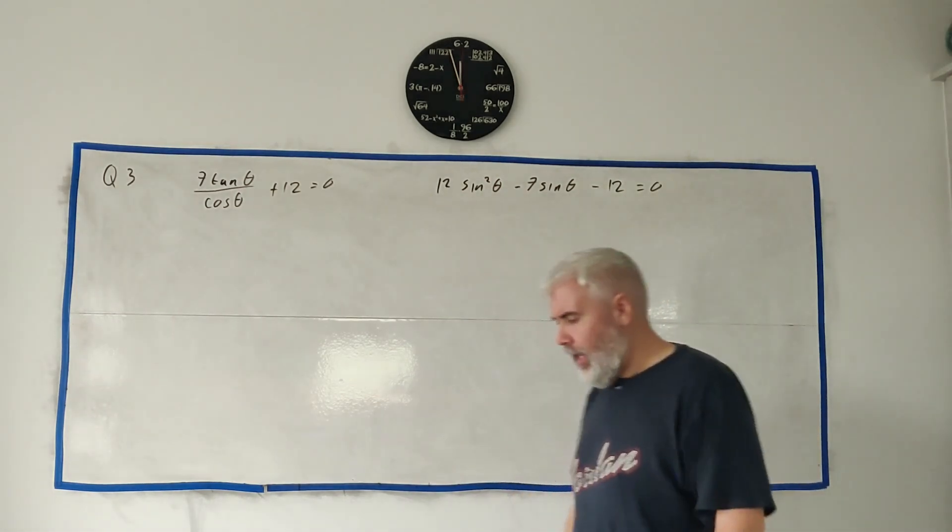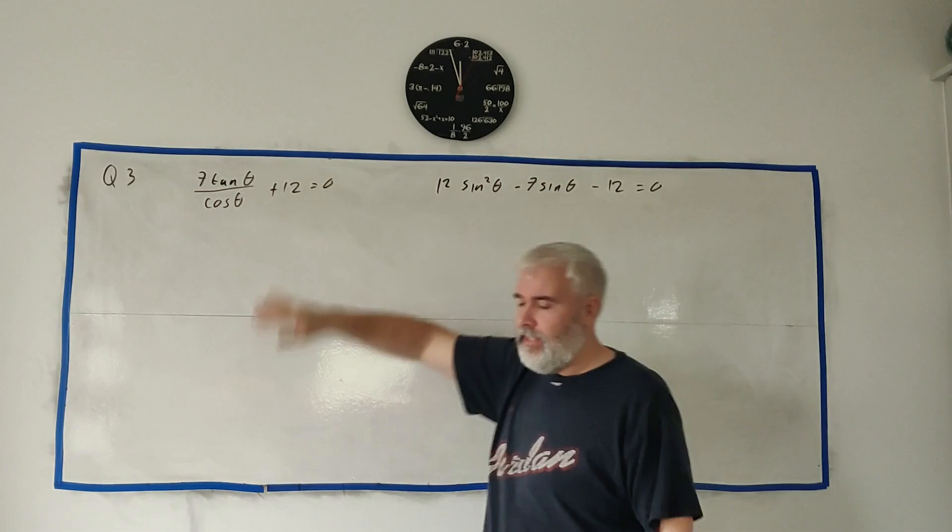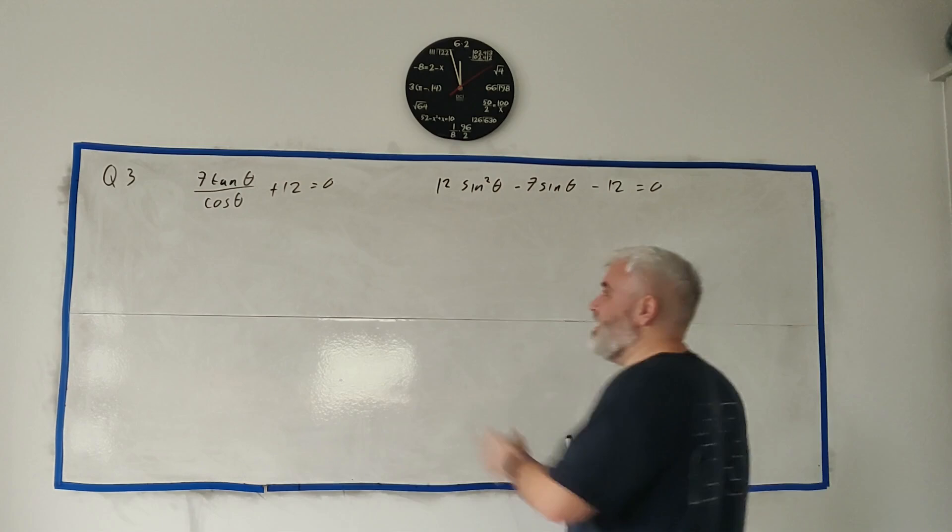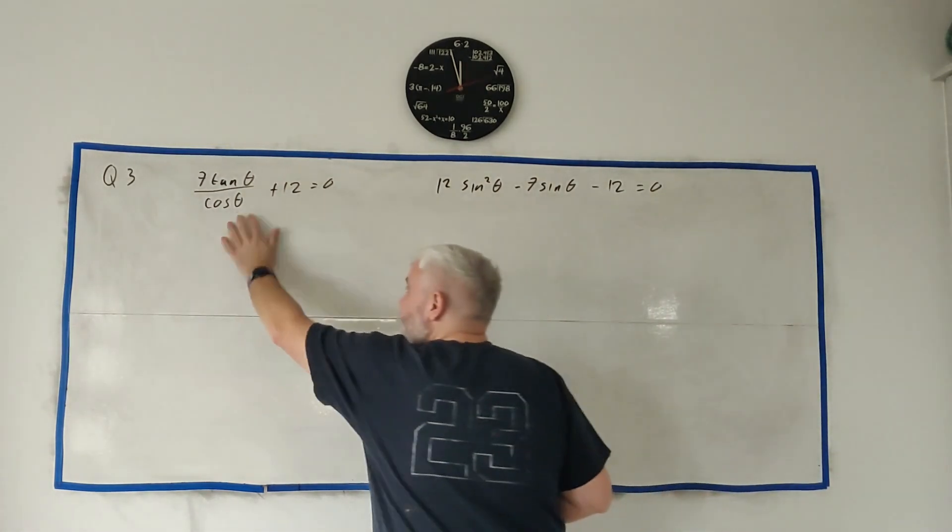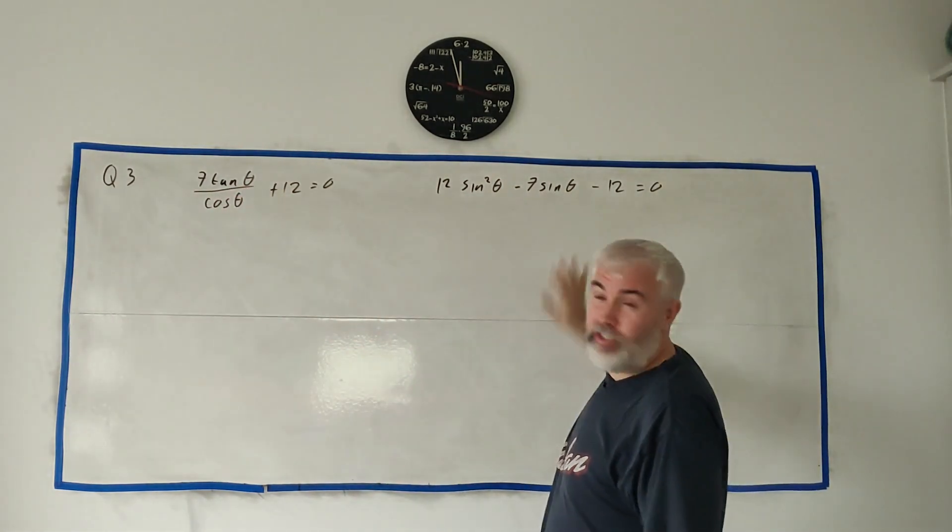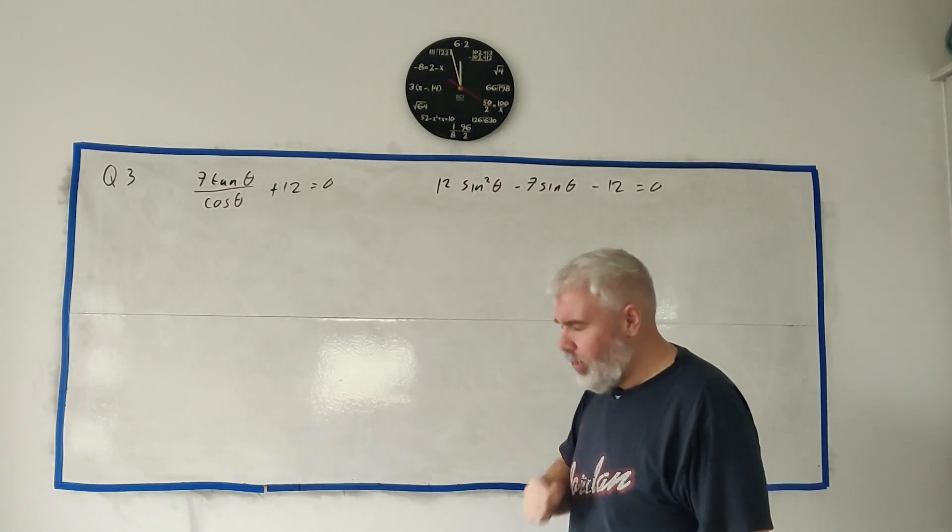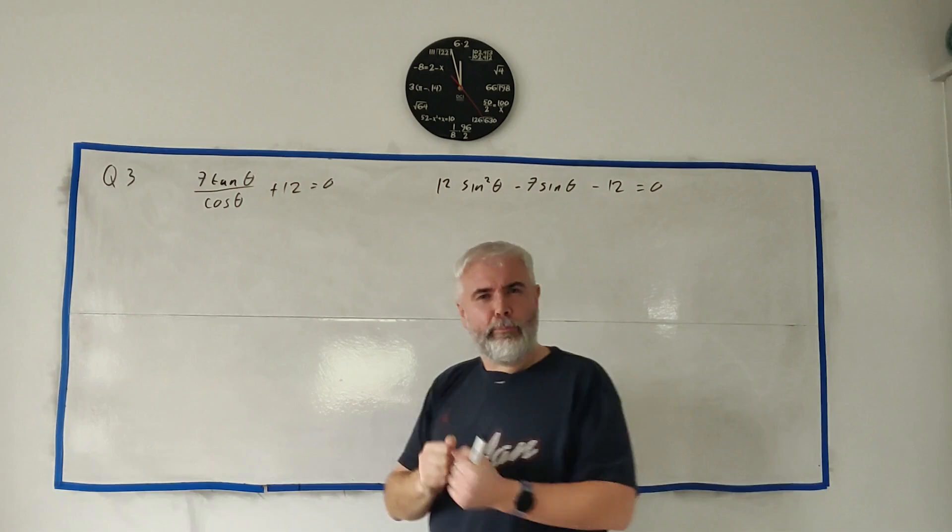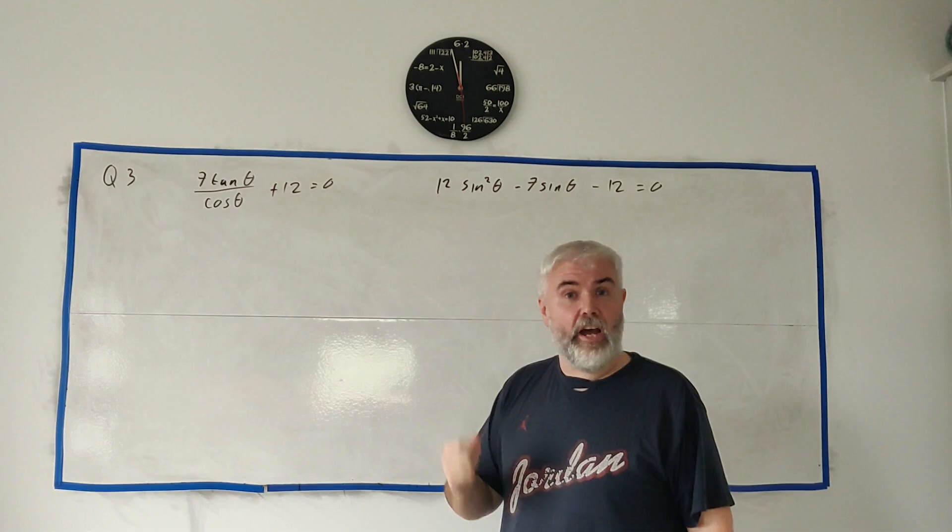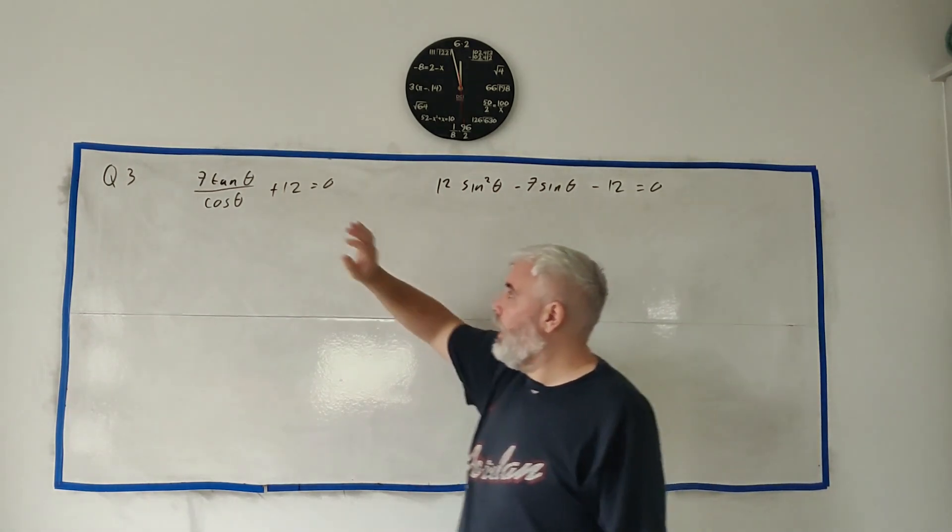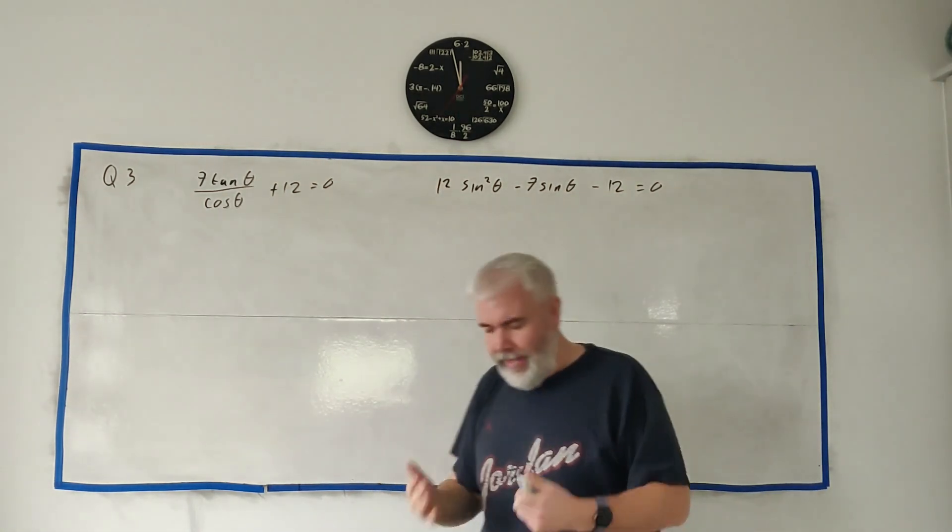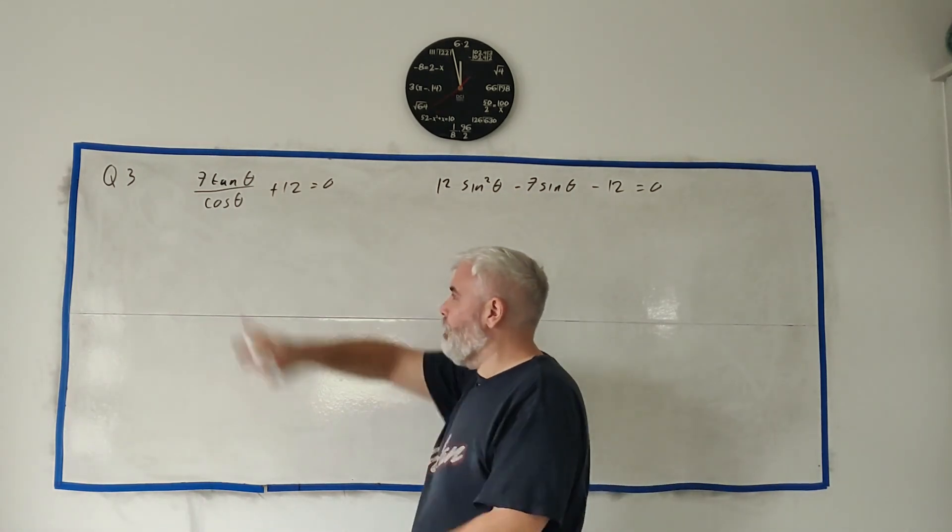But in this case it's easier to go from here to here. And I think this is more complicated because it has a tangent and it has a cosine. This is all just sines. So I think this is a little simpler. Also another hint here would be a tangent can be broken apart quite easily.